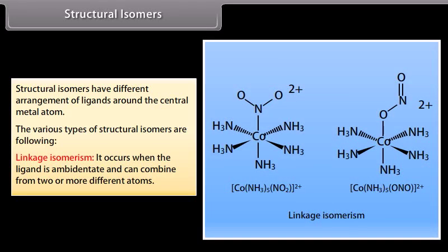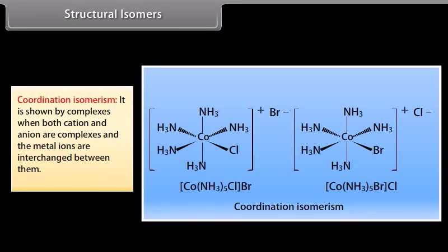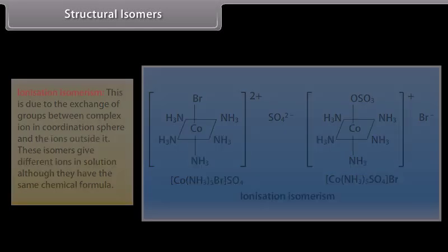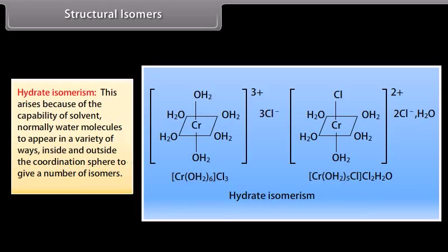Structural Isomers. Structural isomers have different arrangements of ligands around the central metal atom. Types include: Linkage isomerism — occurs when the ligand is ambidentate and can combine from two or more different atoms. Coordination isomerism — shown by complexes when both cation and anion are complexes and the metal ions are interchanged between them. Ionization isomerism — due to exchange of groups between the complex ion in the coordination sphere and ions outside it, giving different ions in solution. Hydrate isomerism — arises because water molecules can appear inside or outside the coordination sphere in various ways.